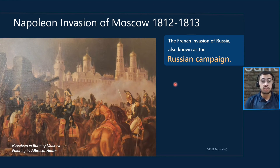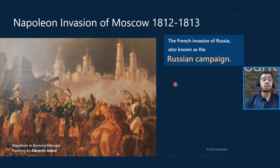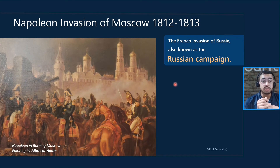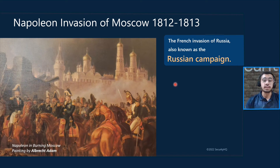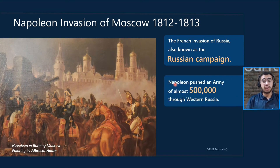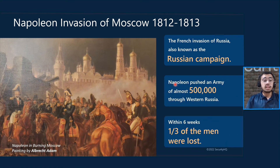Napoleon started with almost 450,000 men and 150,000 horses. As they headed towards Russia, the total army was affected due to reasons such as extreme temperatures, extreme weather conditions, and hunger. Once they reached Russia, they found that Moscow was already with no resources and had to return back, having lost over one third of their men.